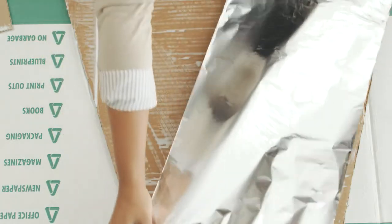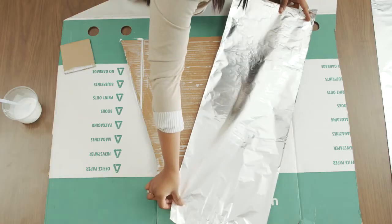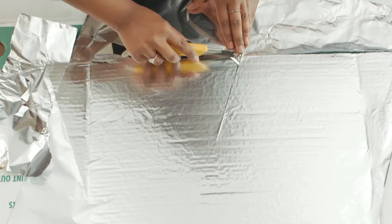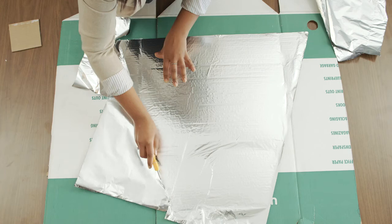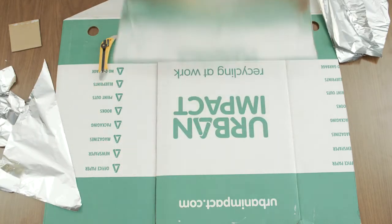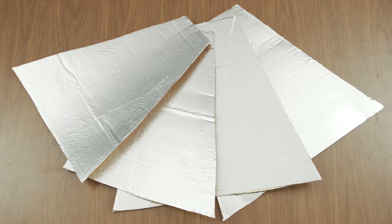Before the glue dries, place the foil on the cardboard shiny side up and smooth it down over the entire surface. Trim the foil so that it is flush with the edge of the cardboard all around. Set aside to dry. Repeat steps three to five for the remaining sections.